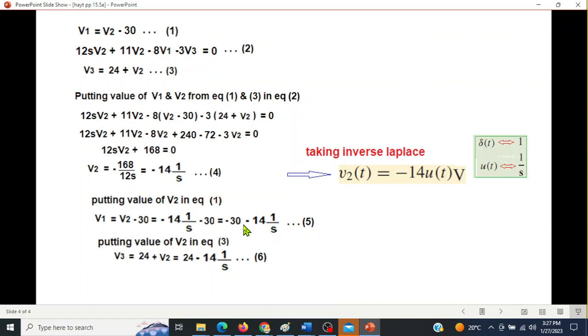Now here we have a constant minus 30. And we know that constant or 1, 1 can be written as delta(t). So minus 30 will be written as minus 30 delta(t). And this one, as usual, is minus 14 U(t).